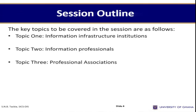The outline we are looking at is: for topic one, we will look at information infrastructure institutions. For topic two, we will consider information professionals — we will see who is an information professional. And then topic three, we will be looking at professional associations.